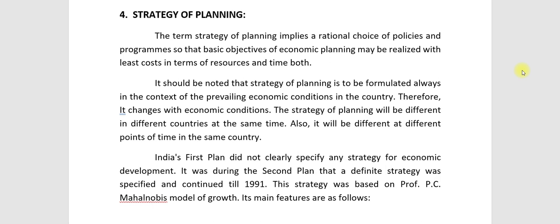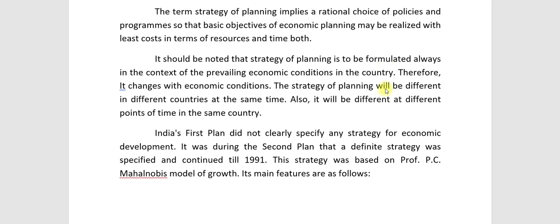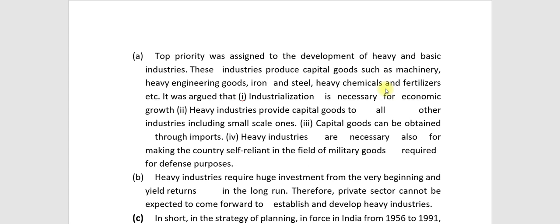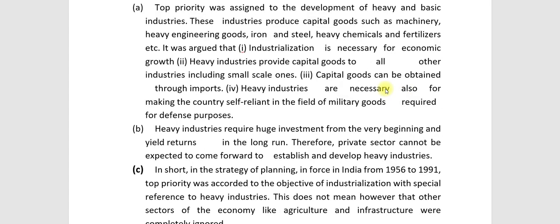Feature A: Top priority was assigned to development of heavy and basic industries. These industries produce capital goods such as machinery, heavy engineering goods, iron and steel, heavy chemicals and fertilizers, etc.